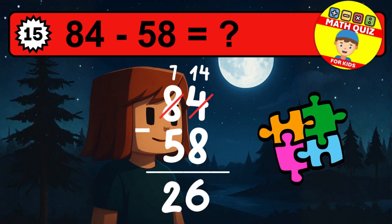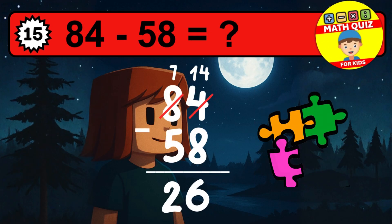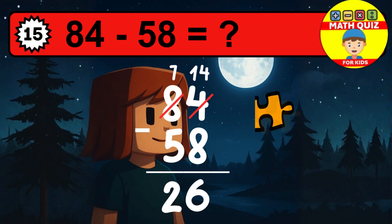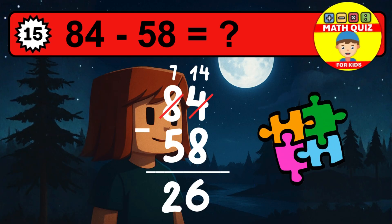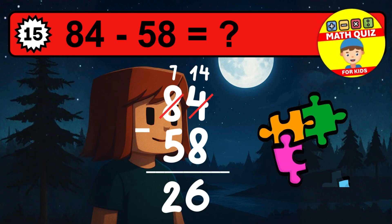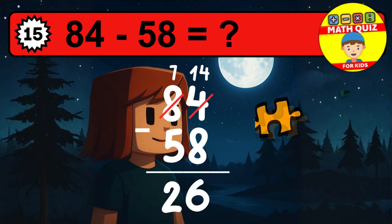Then we go to the tens. Seven minus five is two. The final answer is twenty-six.